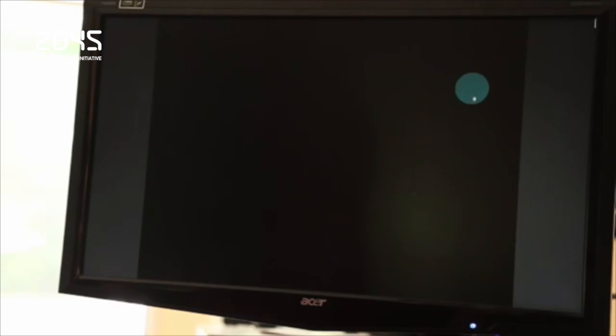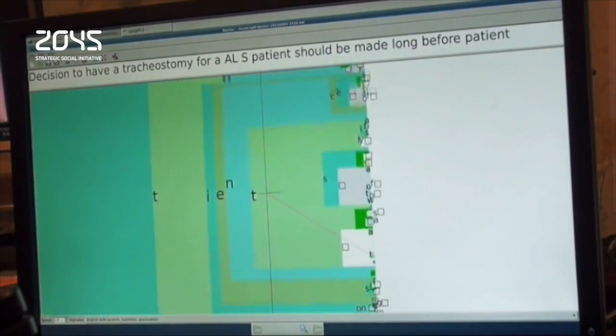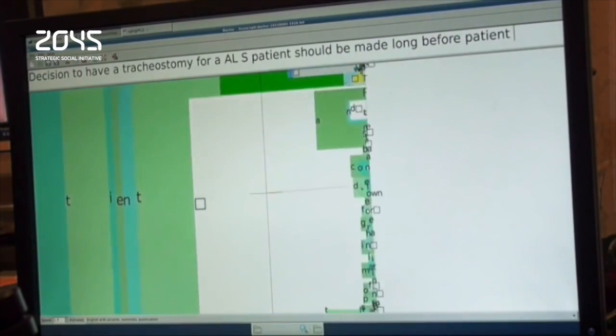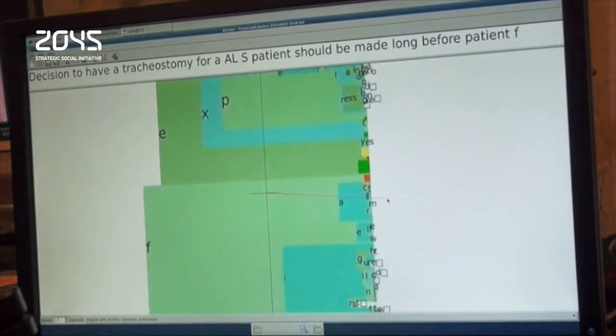This is a significant improvement over a previous BrainGate 2 trial, in which a different patient performed the same task but averaged 8.5 seconds per target. These experiments are designed to make computers accessible to the disabled.